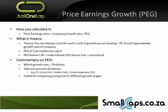So what does it mean? In theory, companies tend to trade in multiples of their earnings. But is a 20 times price earnings cheaper or more expensive than a 10 times price earnings? Your first thought is that 20 times earnings is much more expensive than a 10 times price earnings. But what if the company with the 20 times price earnings had a 100% growth rate for the next 10 to 20 years, while the company with the 10 times price earnings is actually declining with a negative growth rate?